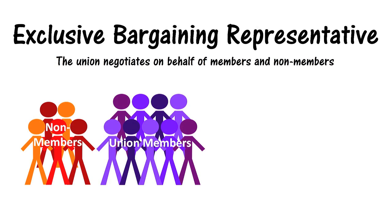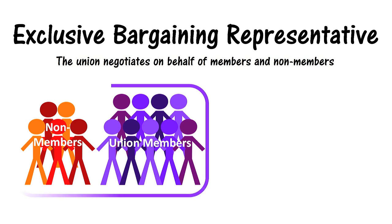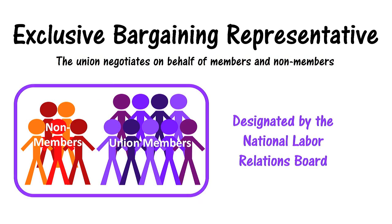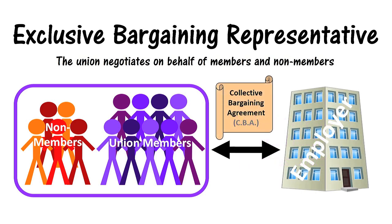Federal law allows a labor union to be the exclusive bargaining representative at a workplace as designated by the National Labor Relations Board. This means a labor union will negotiate a contract, referred to as a collective bargaining agreement, with the employer, and that agreement will apply to all workers, even the workers who are not members of the union.